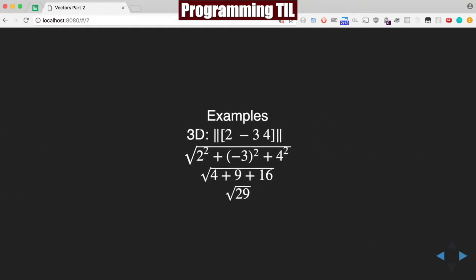As a specific example in 3D, we have the vector (2, -3, 4), and you can see all the following math. The magnitude is ultimately the square root of 29.